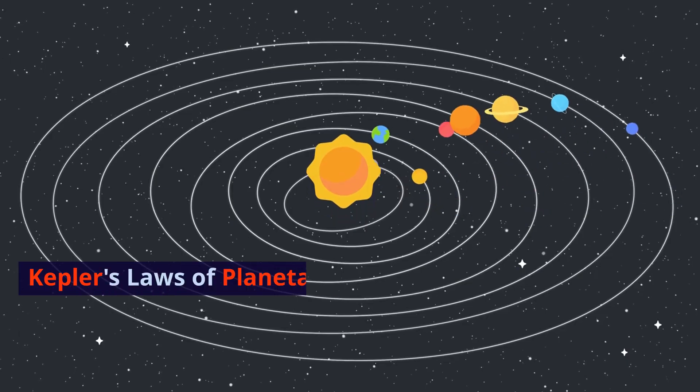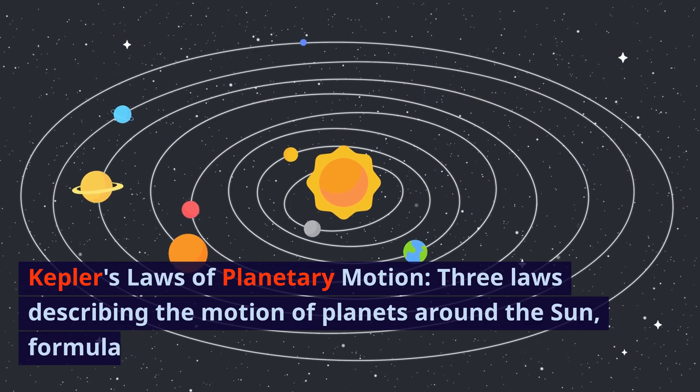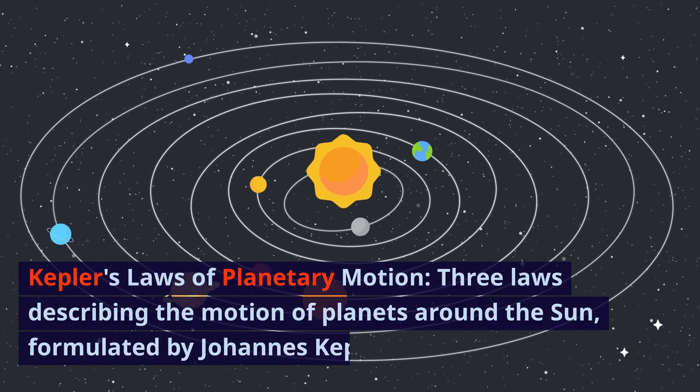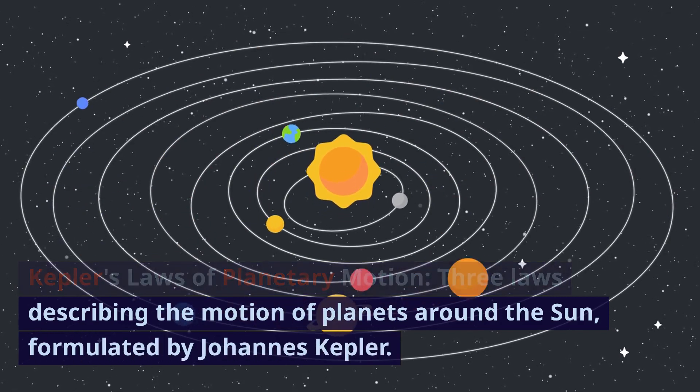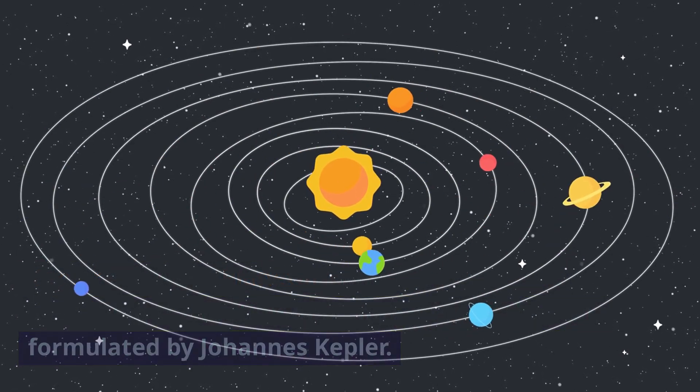Kepler's Laws of Planetary Motion: three laws describing the motion of planets around the Sun, formulated by Johannes Kepler.